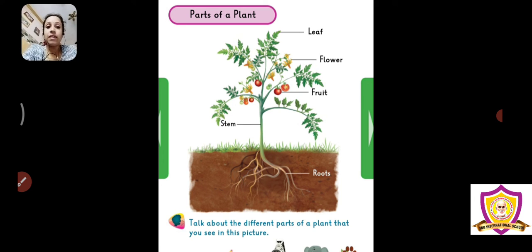So these are the main things that you got to learn in this chapter. What are the different parts of the plants? Five main parts of the plant.